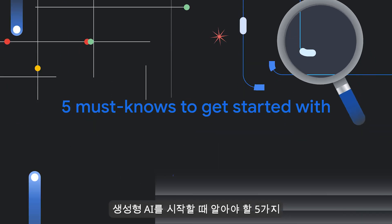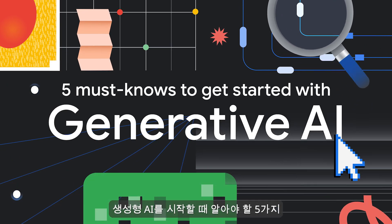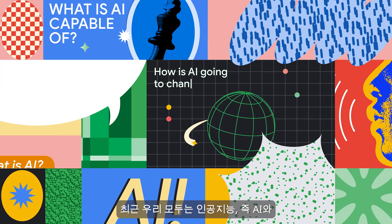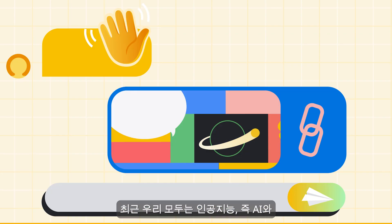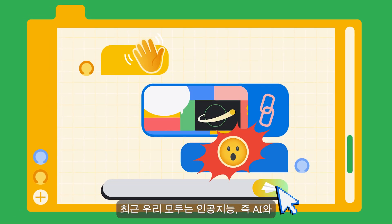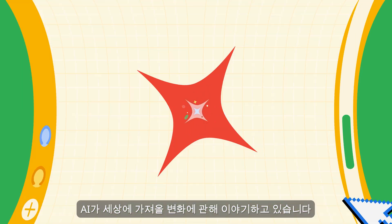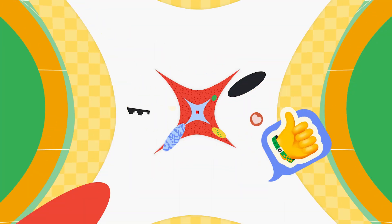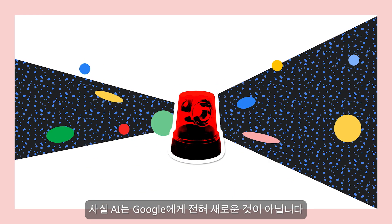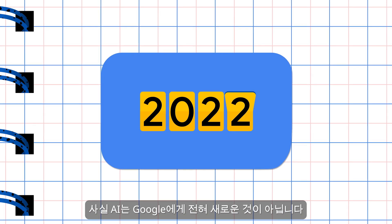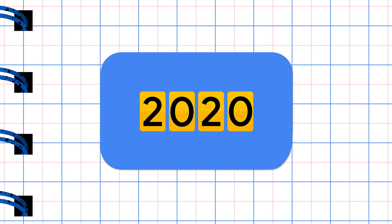Five must-knows to get started with Generative AI. Lately, everyone's talking about artificial intelligence, or AI, and how it could change things. But spoiler alert, at Google, AI's not that new at all.